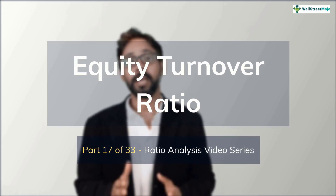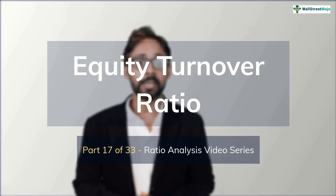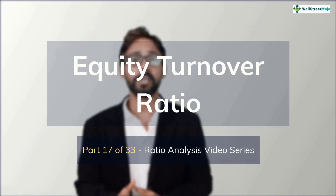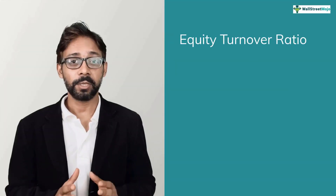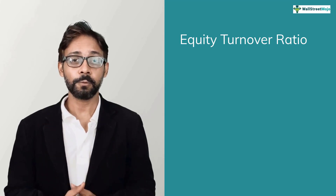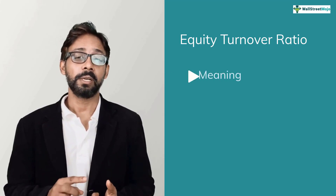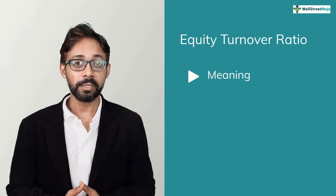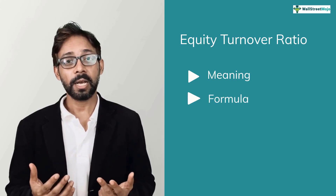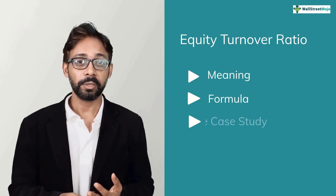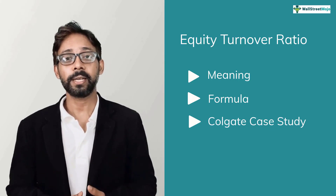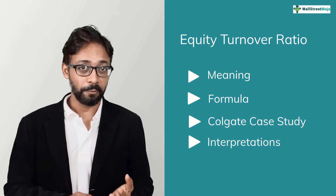In simple terms, equity turnover ratio tells us how much sales a company is generating on its average equity. In this tutorial, we have four focuses: number one, we learn what equity turnover ratio means; number two, its formula and calculations; number three, we'll apply those calculations on the Colgate case study; and number four, its interpretations and uses.